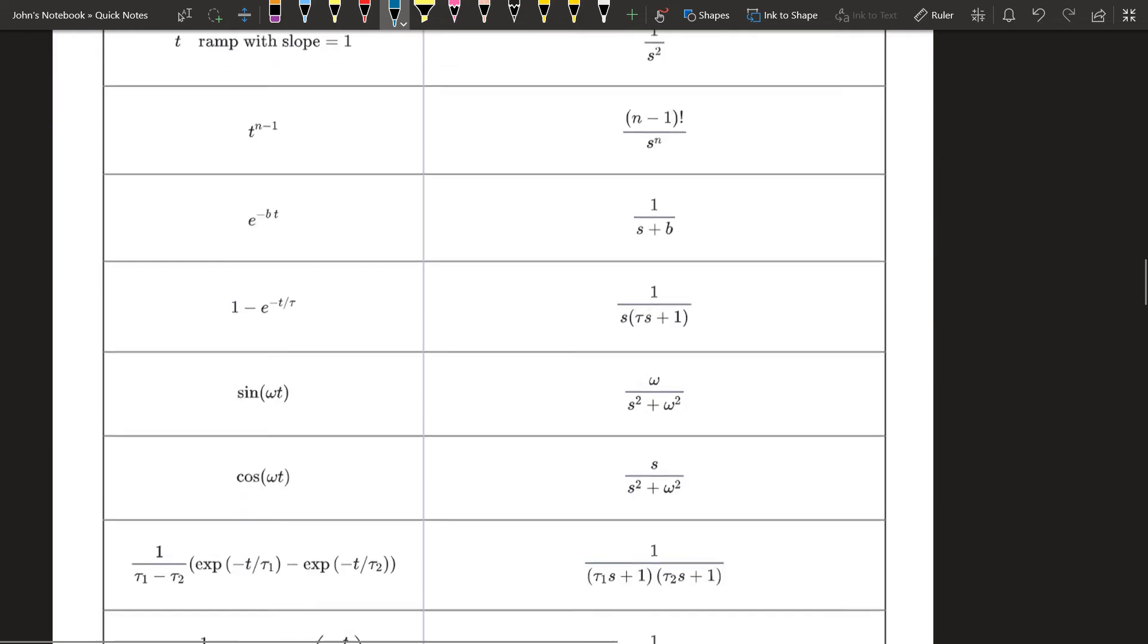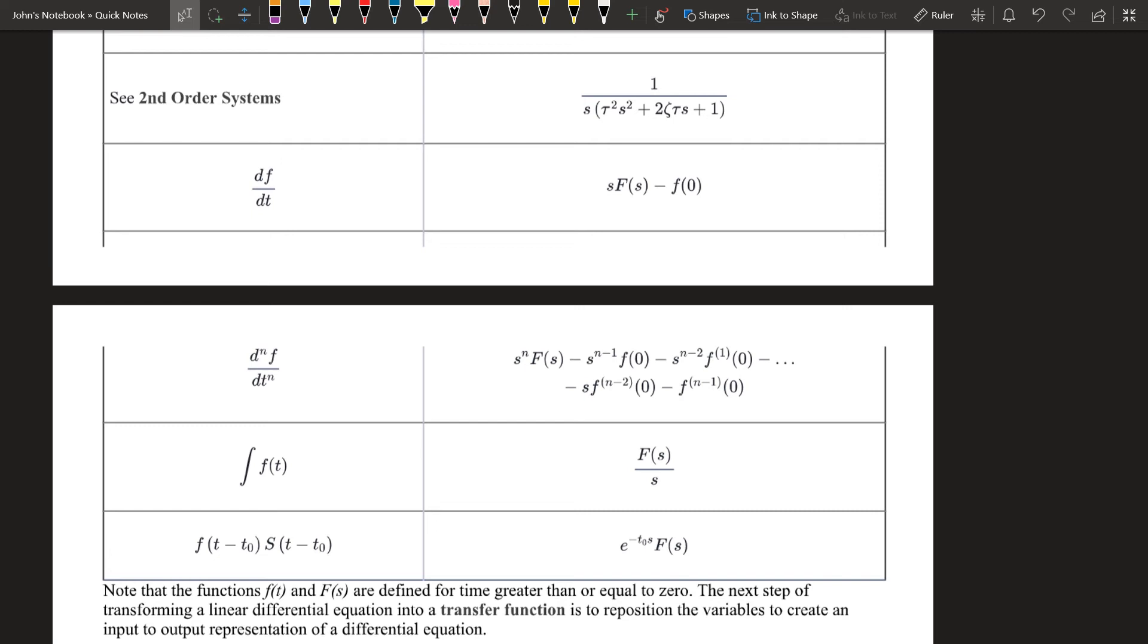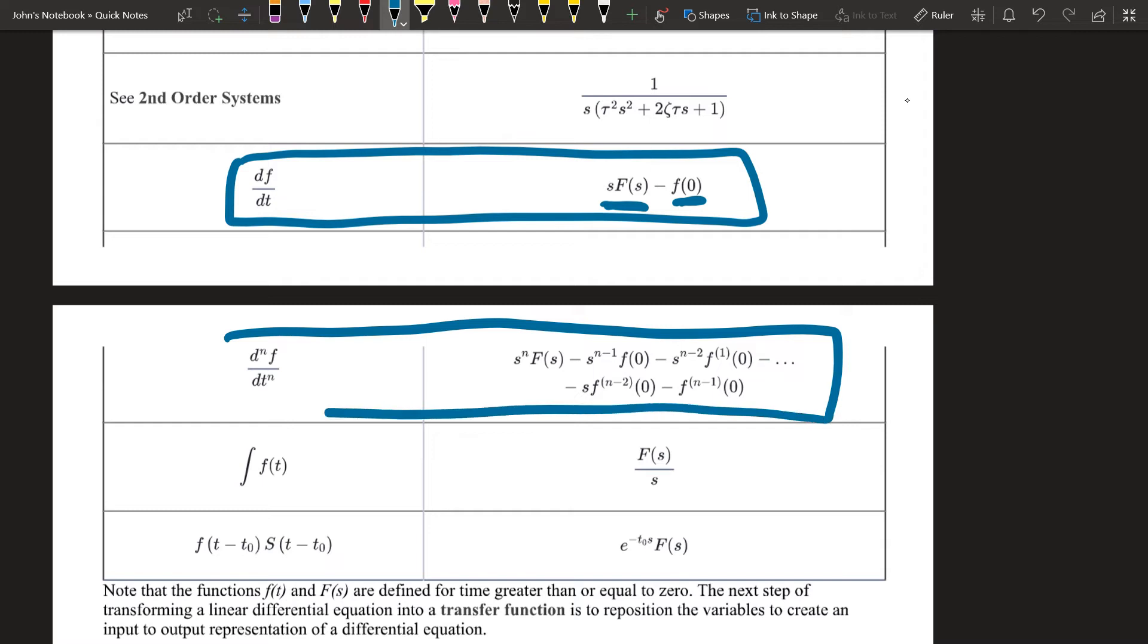Here's our Laplace transform table. You can do a UV decomposition and derive this. I have some information on that as well. For the derivative, the first derivative is going to be s times that variable, f of s, minus the initial condition. But if we have a higher order derivative, then we have to use this formula here.